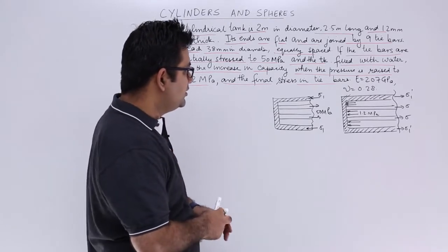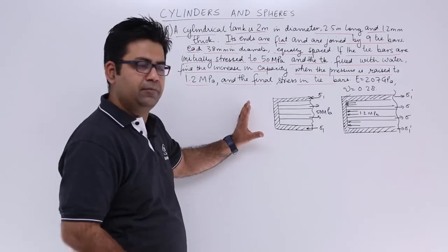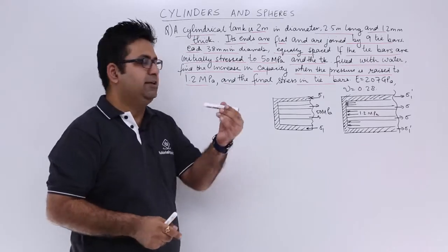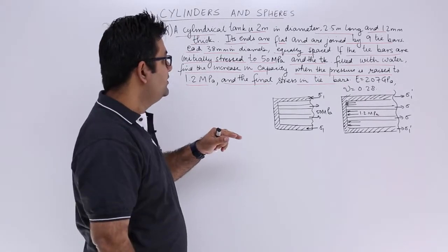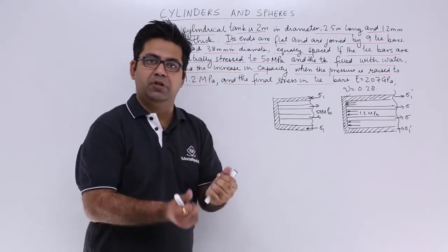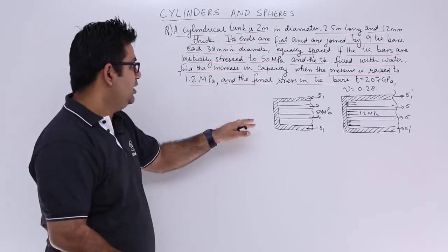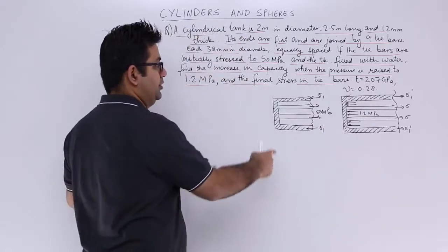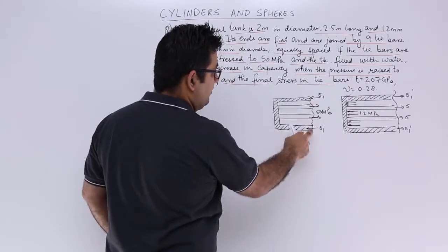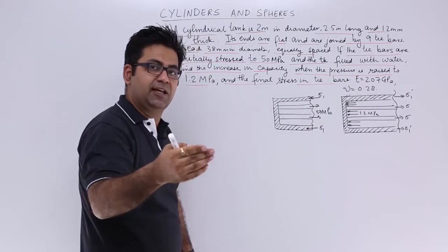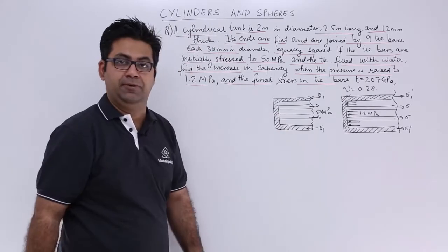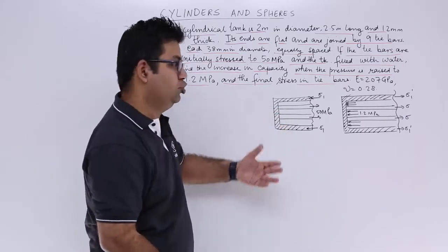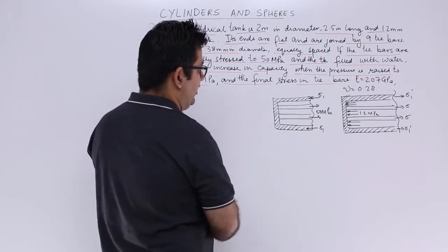This is the initial condition and this is the final condition. You have a cylinder whose ends are flat, and the ends are joined with the help of 9 tie bars. The 9 tie bars are stressed at 50 MPa initially. So this will produce an initial compressive stress in the cylinder — that is sigma_1. This is the cylinder and these are the tie bars; there are 9 of them, though I have just shown 2 for the sake of drawing a schematic.